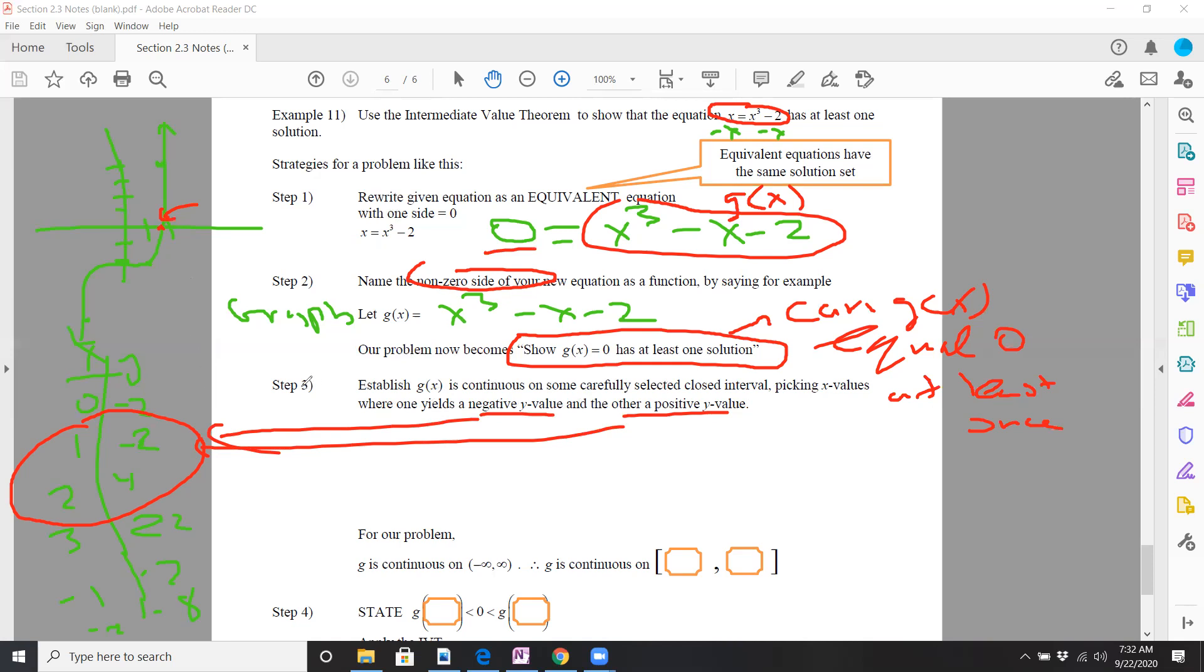So step three, actually, I kind of did prior to steps one and two, in a way, where I wanted to find that. So obviously, we'll let a equal one. So g of a, of course, is negative two. Let b, remember we talked about a and b in the theorem, a being the left endpoint of your interval, b being the right endpoint of your interval. And b is two, so g of two, or g of b, equals four.